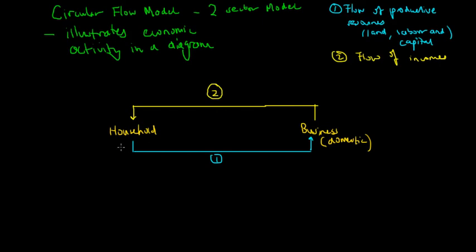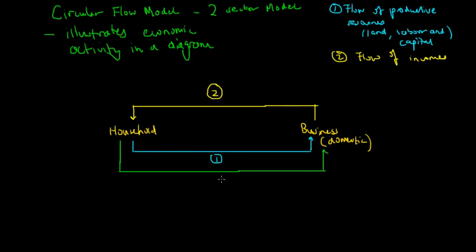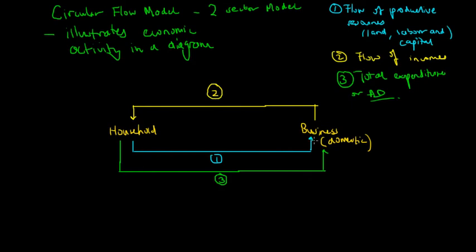What the households can do with this flow of incomes is spend it. In the two sector model we are assuming there is no financial sector, and households don't actually save their money — they spend everything they get. So flow three is the total expenditure or aggregate demand in the economy. The households provide businesses with resources, businesses pay back the households through the flow of incomes, and households spend all their incomes in order to increase their material living standards.